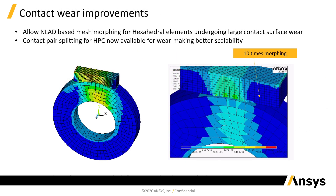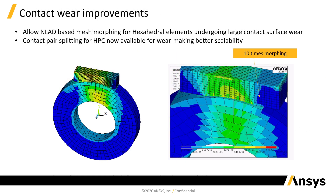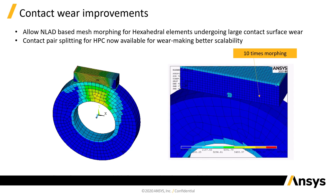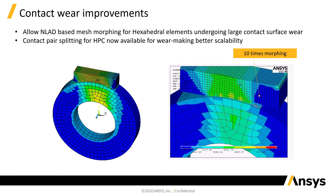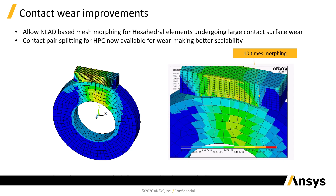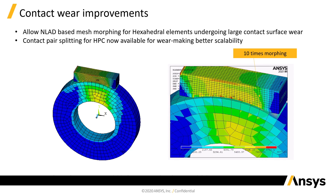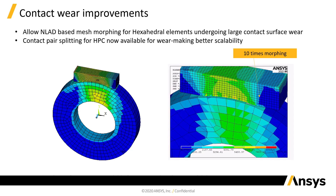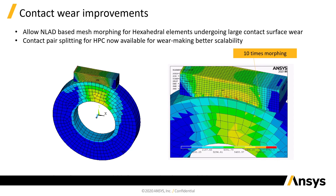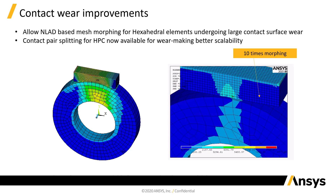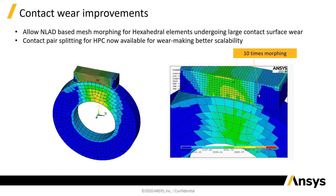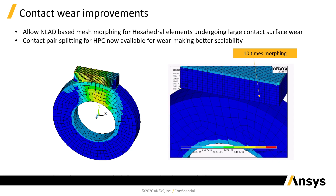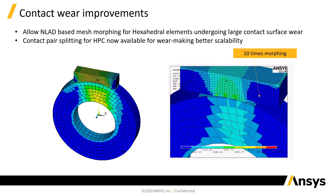Another improvement in contacts: if you combine wear with adaptive meshing, it has been significantly improved. It morphs much better now — you use nonlinear adaptive meshing for the hex elements that undergo large contact surface wear, and it's automatically smoothed so that you can combine both features together.